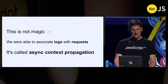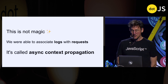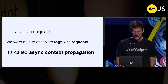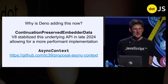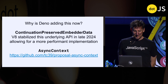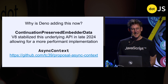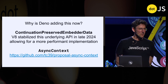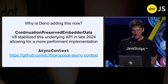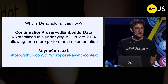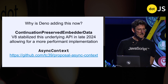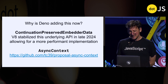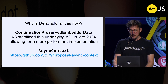You might think this is magic — it is not magic. We were able to associate these logs with requests automatically without any code changes. This uses something called async context propagation. In late 2024, V8 stabilized the Continuation Preserved Embedder Data C++ API that allows for fast traces in JavaScript. This was spawned by the async context proposal and the earlier async hooks work in Node. The async context TC39 proposal is currently at stage two and looks like it will be moving to stage three, and eventually into browsers — maybe next year or so.